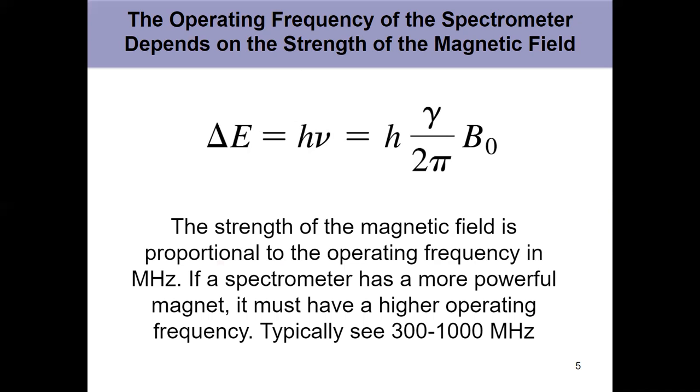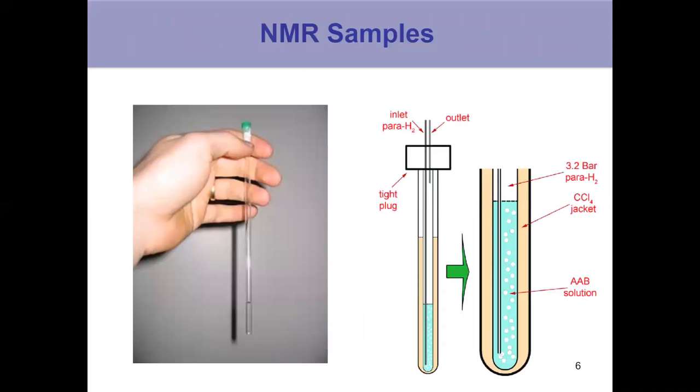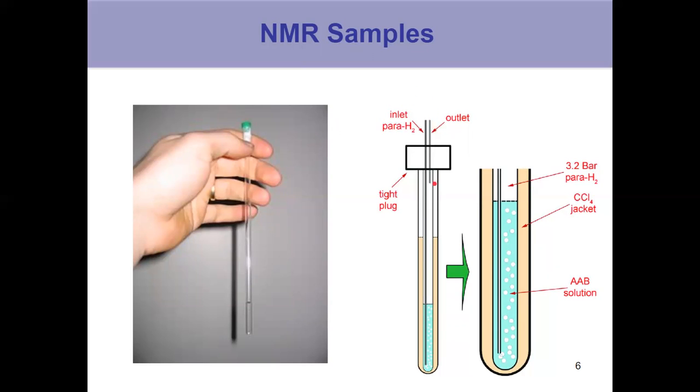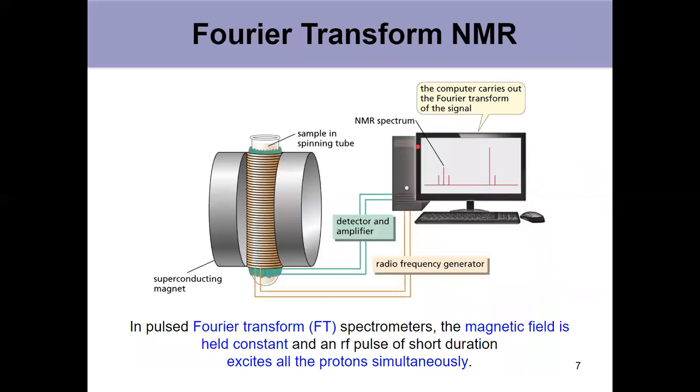Before we actually look at a spectrum and the information it gives us, how do we actually get the data? How are these things run? Well, this is what a sample looks like. It's called an NMR tube. You dissolve a really small amount in the tube, just a couple of milligrams, and about a half a milliliter of solvent. We'll talk more about solvents later. But then that tube is put into another vessel to put in the NMR.